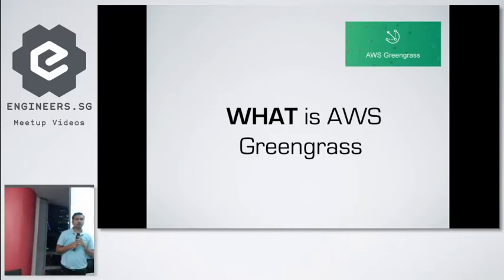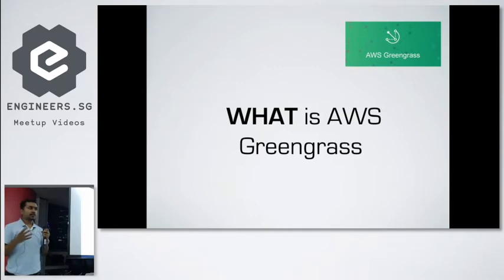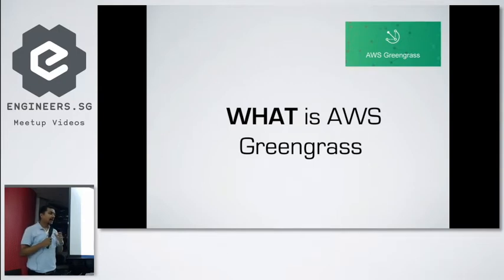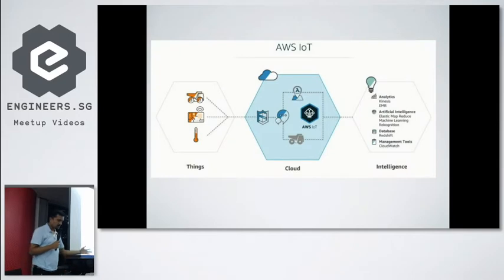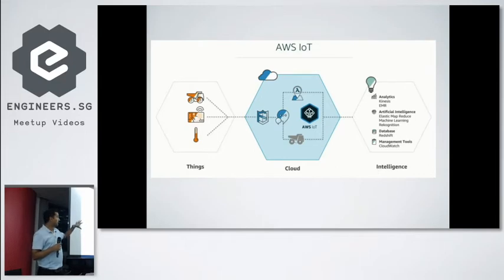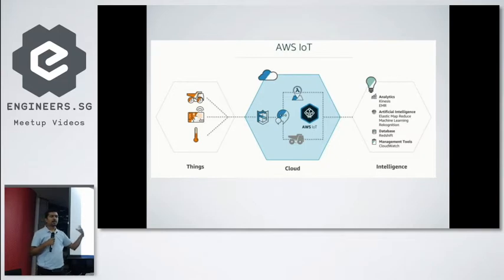AWS Greengrass is the solution for that — it's called edge computing. What AWS Greengrass gives you is an SDK. You take that SDK and flash it onto your hardware like a Raspberry Pi, and then you can take all the cloud decisions you'd normally make on AWS cloud and actually do it on your local Raspberry Pi or any other hardware. In a typical IoT world, you have sensors sending data to the cloud, where you store it and then take actions like sending an email or SMS alert.